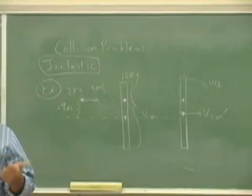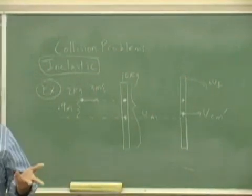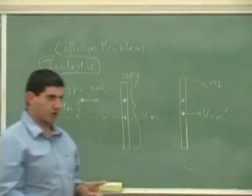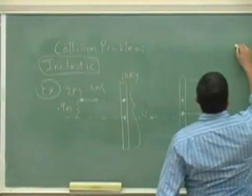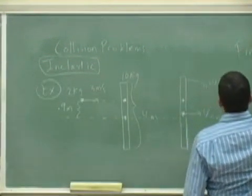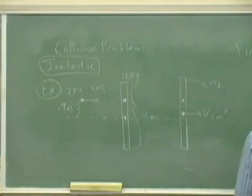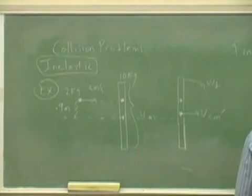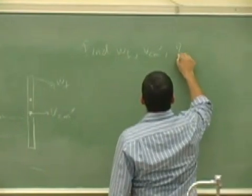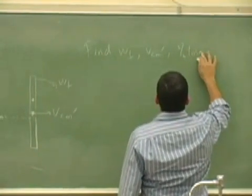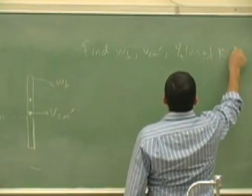So I want you to find V center of mass prime and omega final and the percent loss of kinetic energy. Find omega final, V center of mass prime, and the percent loss of KE.